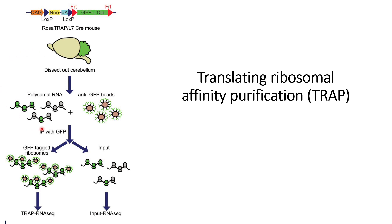To separate the GFP-tagged ribosomes from ribosomes not bound to any mRNA or lacking the GFP tag, we use anti-GFP beads. This allows us to isolate the GFP-tagged ribosomes from the untagged ones.